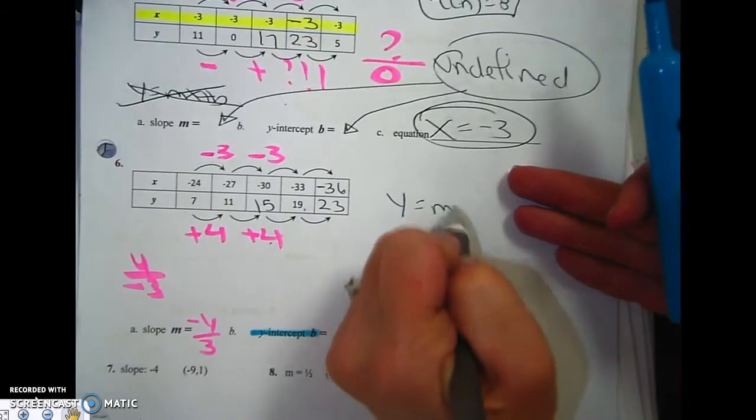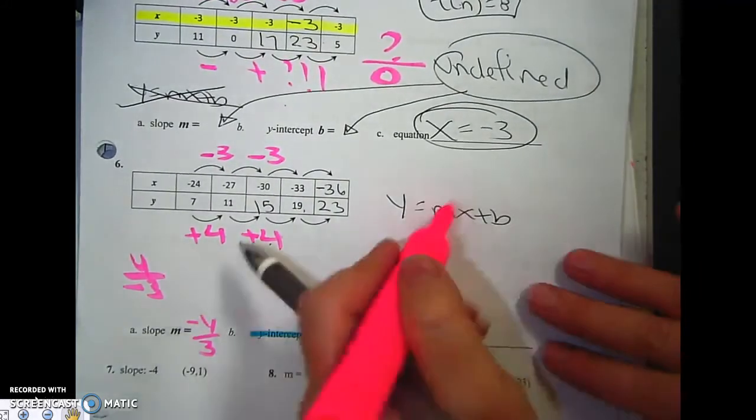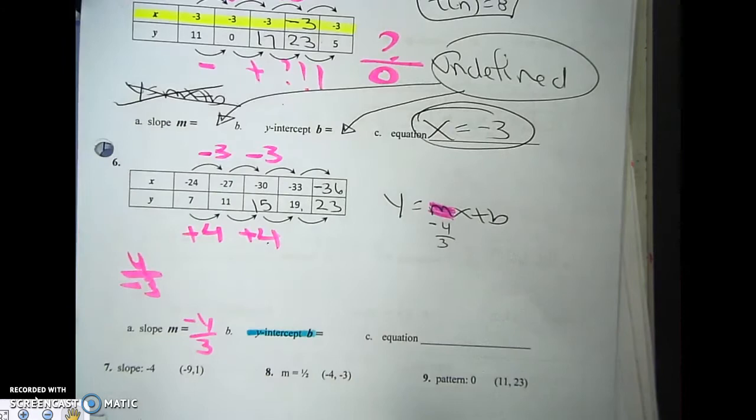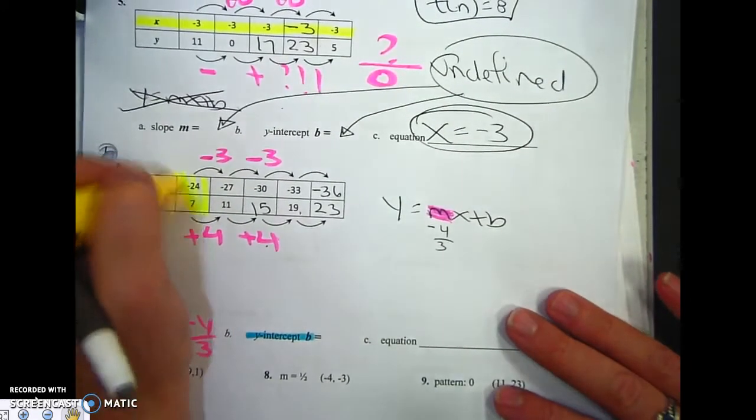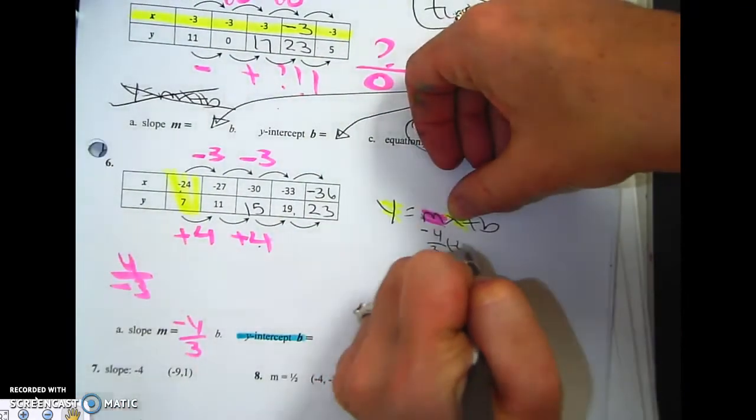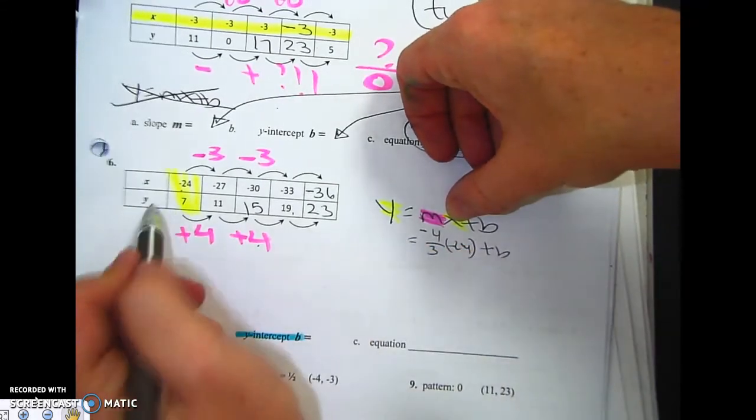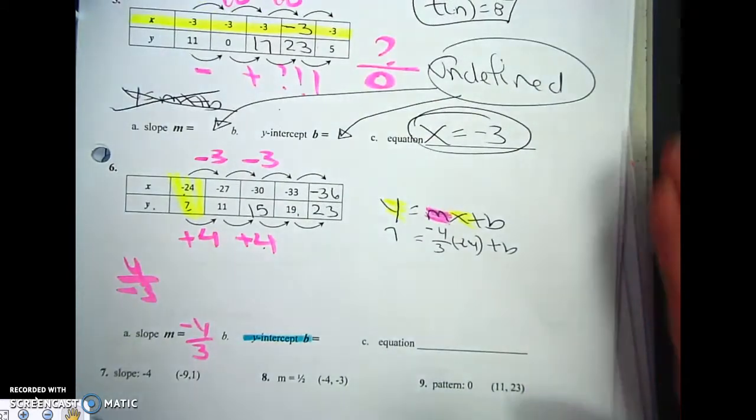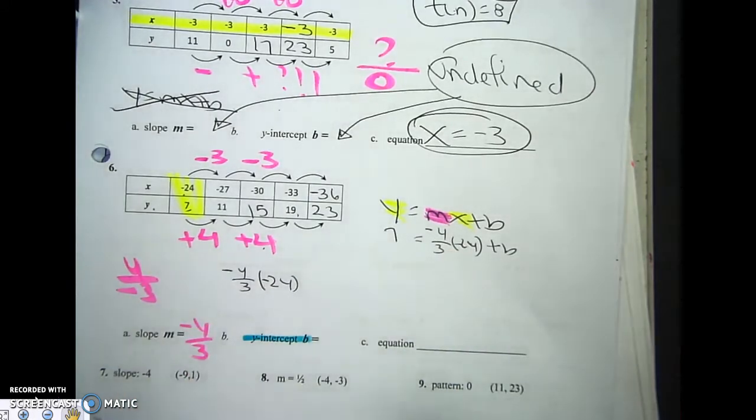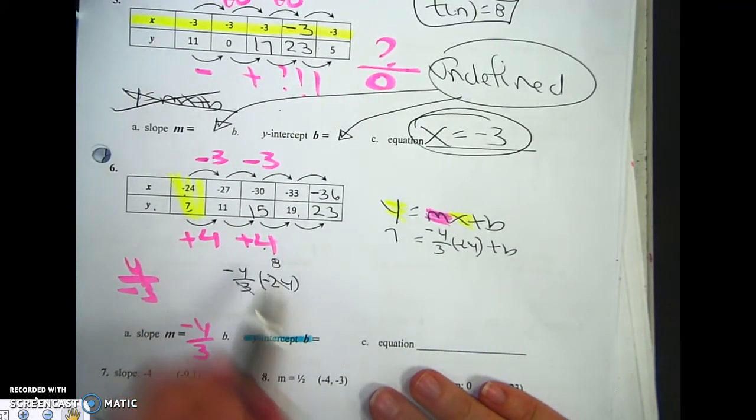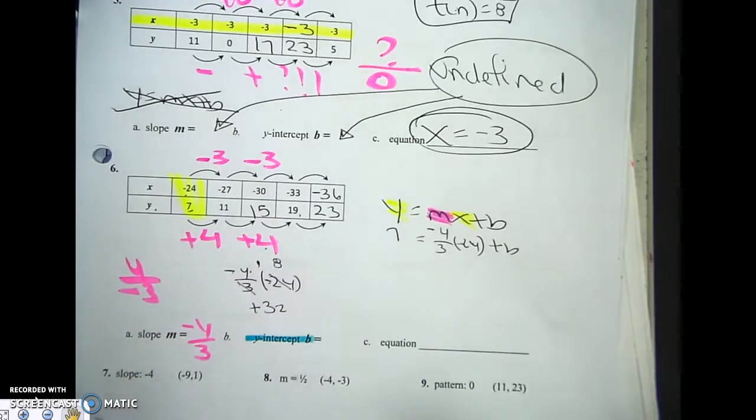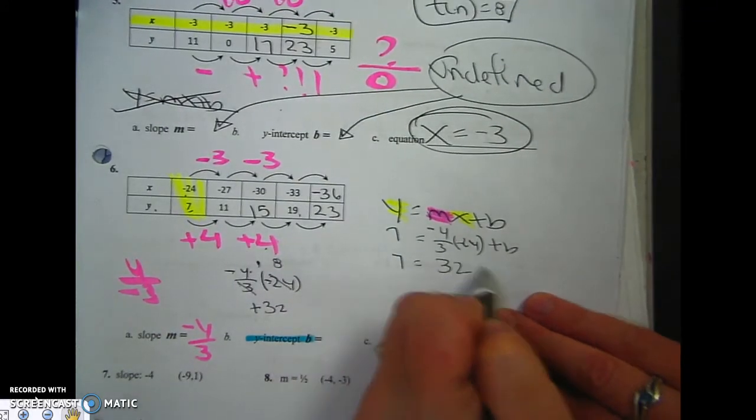So now I've got to go y equals mx plus b. Well, my m is negative 4 over 3. Remember, for my x, I like to use my first point. So my x, let me highlight that there so you can see that. My x is negative 24 plus b. And my y is 7. Now, this one is more difficult, so let me do this to the side. When you have negative 4 thirds times negative 24, 3 goes into 24 eight times. And then a negative times a negative is a positive. And 4 times 8 is 32. So it's 7 equals 32 plus b.